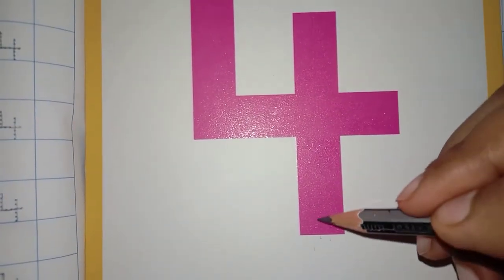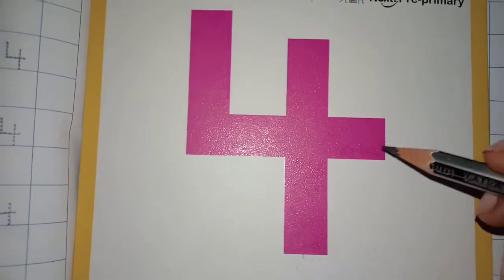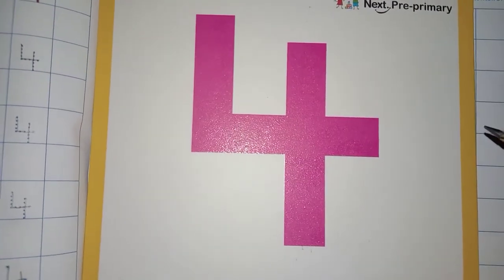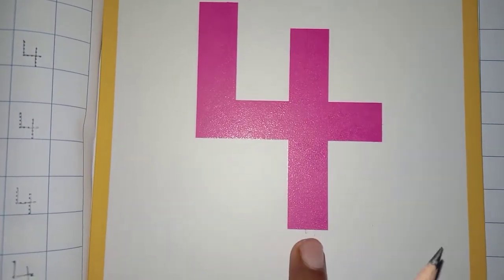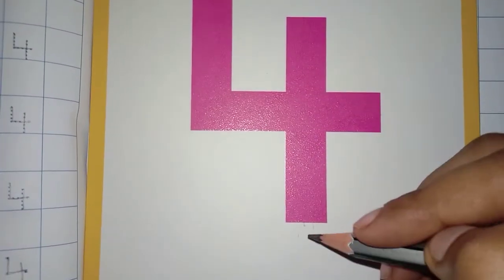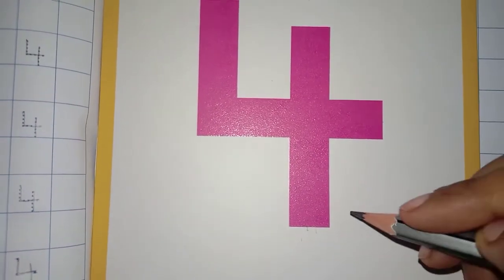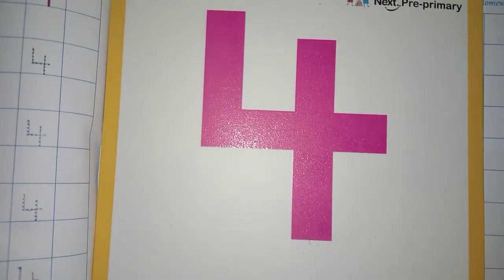And then make this standing line. Parents, please be careful when your child is writing for number 4. Please ensure that the formation of 4 is just like this. This standing line will not come here at the end. You have to leave this space. Okay?